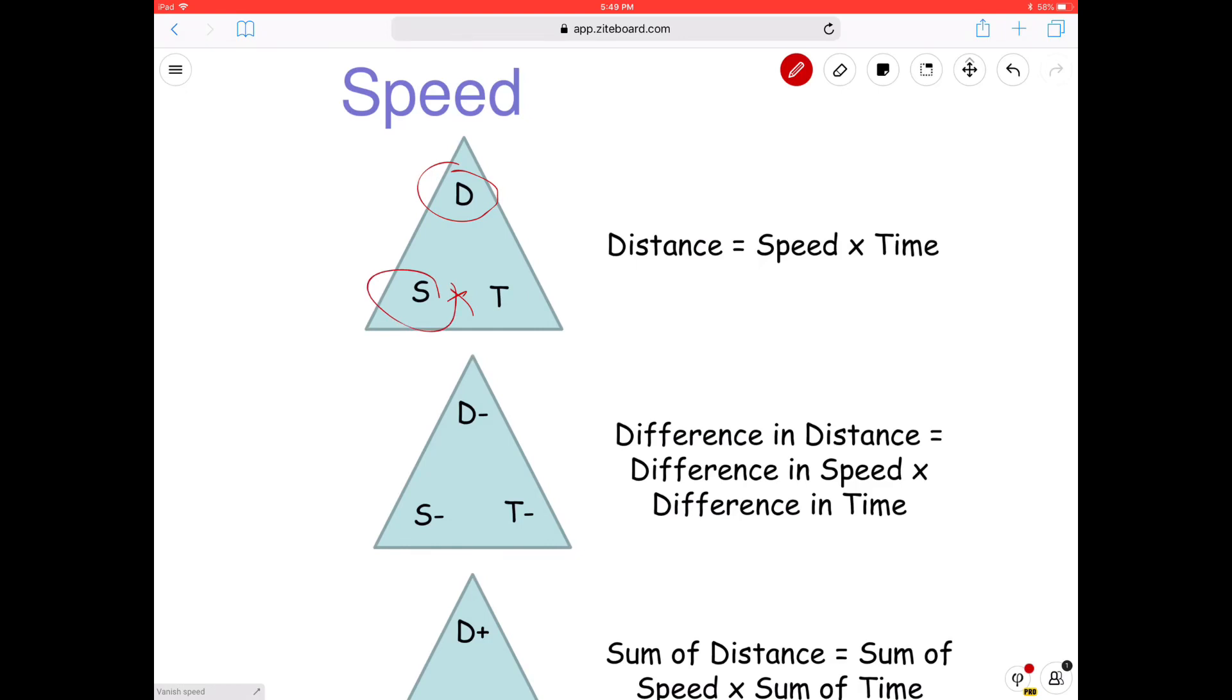If you want to find speed, what do you do? We take distance divided by time. Yeah, distance divided by time. Okay, likewise, if you need to find time, what do you do? Distance divided by speed. Yeah, distance divided by speed. So this is the normal one.